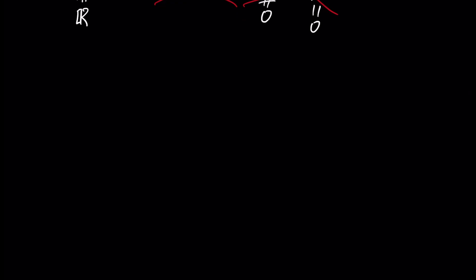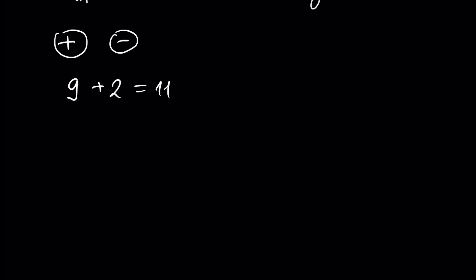Let's first talk about addition and subtraction. Addition and subtraction have no strict definition, but we can describe addition as the process of combining two numbers. For example, 9 plus 2 equals 11. The two numbers, 9 and 2, are called addends, and 11 is called the sum.